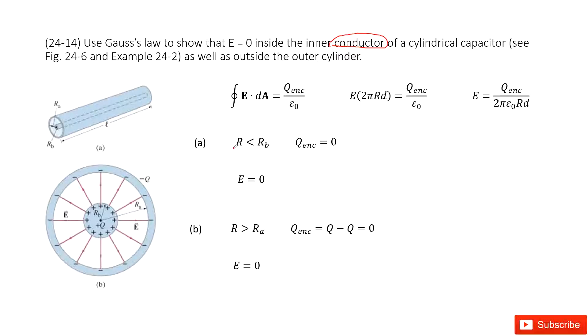Now in the first case, R smaller than Rb. That means we can draw a Gaussian surface, look like this one. And then we write down Gauss's law: E do the integral with the surface, with the Gaussian surface equal to enclosed charge over epsilon naught.